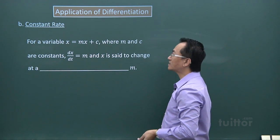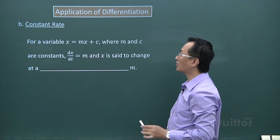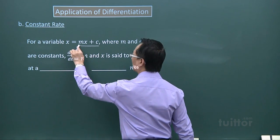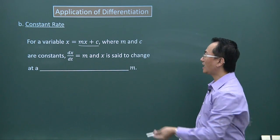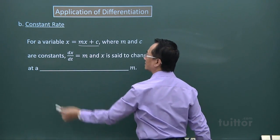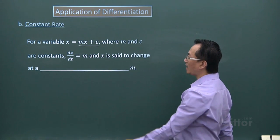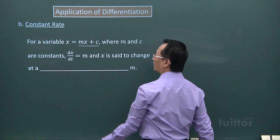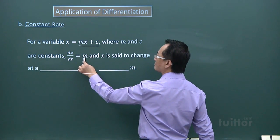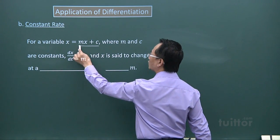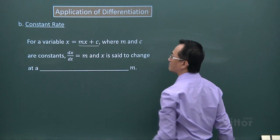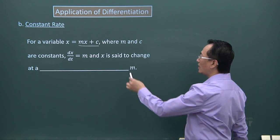Next we look at constant rate. When we think about constant rate, the variable will be in linear form mx plus c, where m and c are constants. If you differentiate the function here, you will get m.